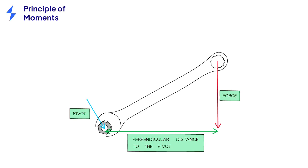Here, the spanner is the lever and the nut the pivot. A force is applied to the handle.